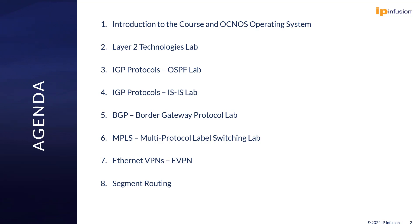Then we are going to talk about MPLS and Layer 3 VPNs. We are going to cover internal configuration using LDP for MPLS forwarding and label switching, and we are going to talk about VRFs. After that I'm going to speak about using different types of protocols for PE-CE adjacencies, such as OSPF, static routes, ISIS, or BGP.